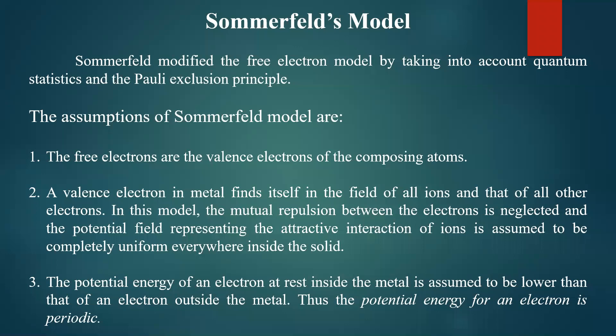The second postulate: the valence electron in a metal finds itself in the field of all ions. There will be an electric field due to the ions present in the metal and that of other electrons. In this model, the mutual repulsion between electrons is neglected, and the potential field representing the attractive interaction of ions is assumed to be completely uniform everywhere inside the solid.